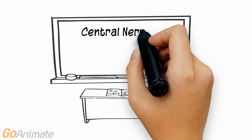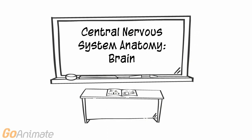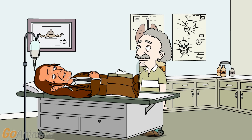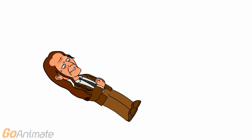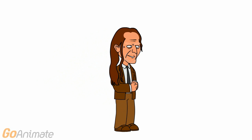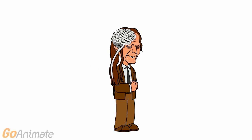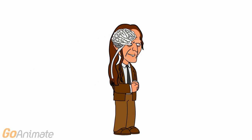Let's learn about the brain. The central nervous system consists of the brain and spinal cord.